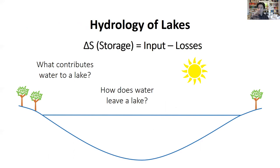Next we're going to talk about the hydrology of lakes, focusing on the water balance. The basic first-order questions are: what contributes water to a lake — how does water actually arrive and where does it come from — and second, how does water end up exiting or leaving the lake? We can construct a basic water budget, which is a function of changes in storage, equal to the sum of inputs subtracted by the sum of losses from the system.